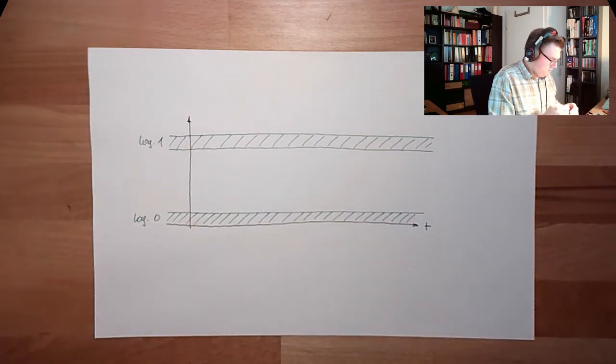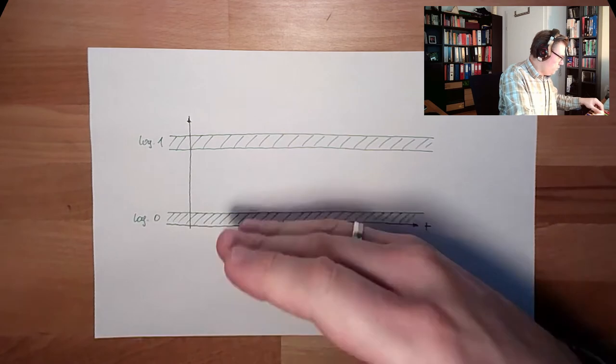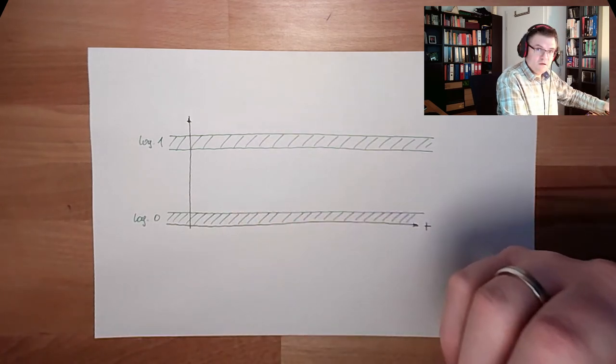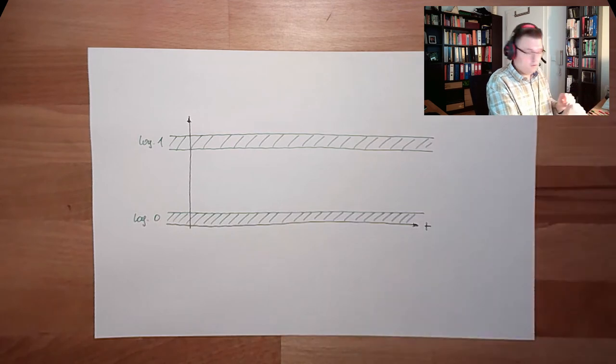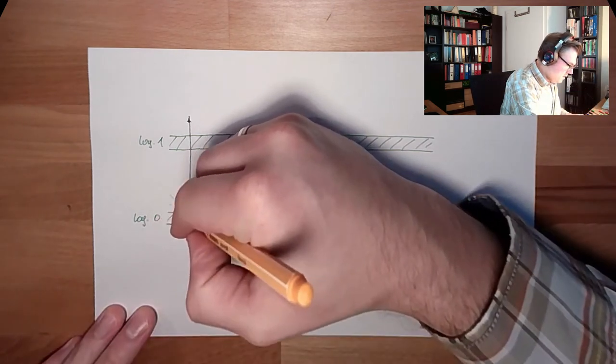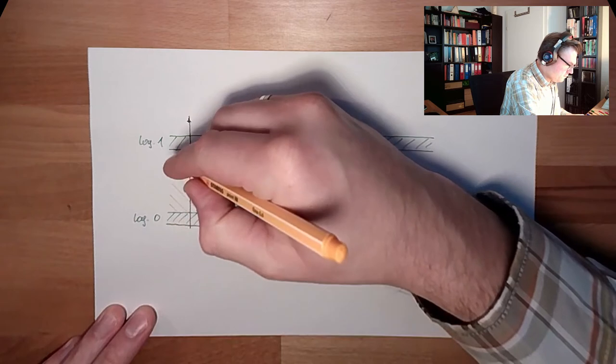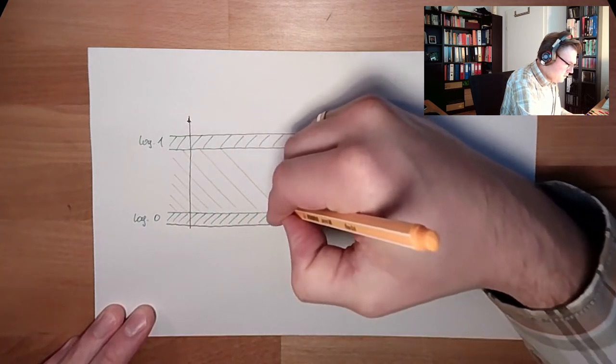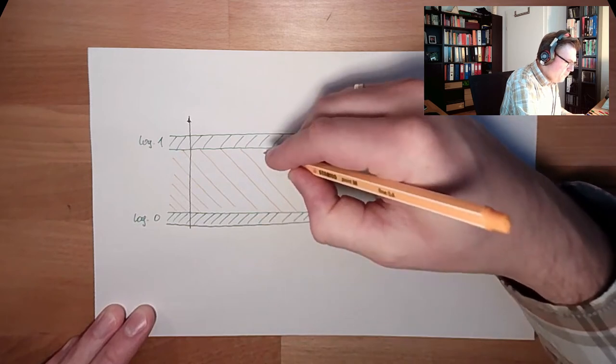In between, here, this area, it is not guaranteed. It's not guaranteed at all. What is happening? This area here is the so-called forbidden area.